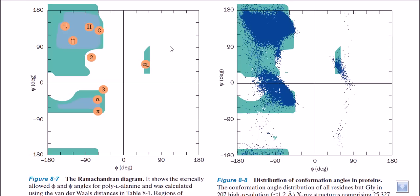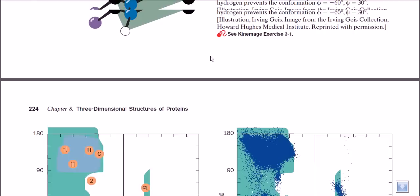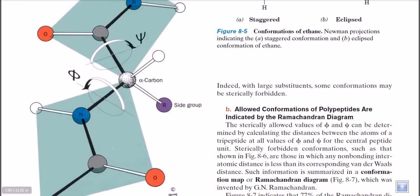These bonds have freedom for rotation around the plane of 360 degrees. Looking at the diagram, there are torsional angles between planes — for example, the torsional angle between C, N, C-alpha and N, C-alpha, C is called phi, as well as the torsional angle between N, C-alpha, C and C-alpha, C, N, which is called psi. These torsional angles are present along this axis of the bonds.